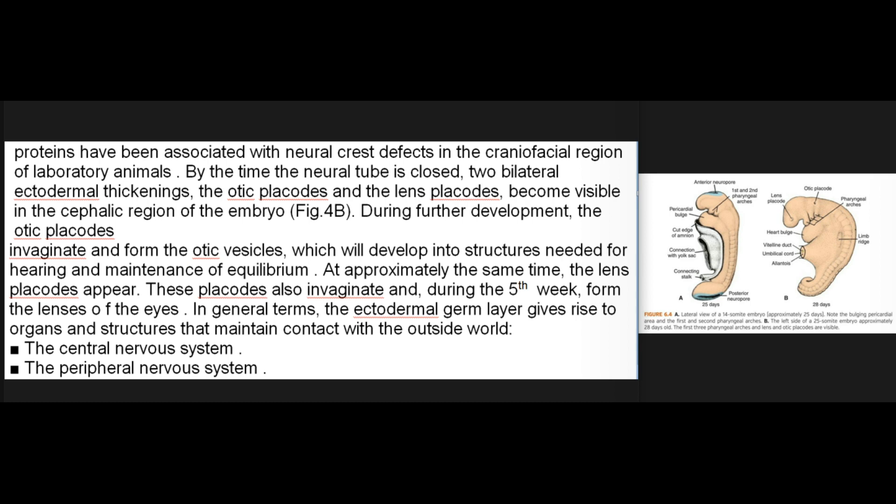By the time the neural tube is closed, two bilateral ectodermal thickenings — the otic placodes and the lens placodes — become visible in the cephalic region of the embryo. During further development, the otic placodes invaginate and form the otic vesicles, which will develop into structures needed for hearing and maintenance of equilibrium. At approximately the same time, the lens placodes appear. These placodes also invaginate and, during the fifth week, form the lenses of the eyes.